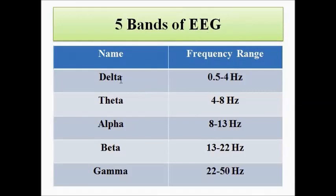The five bands into which the EEG frequency is divided are: delta, with a frequency range of 0.5 to 4 hertz; theta, from 4 to 8 hertz; alpha, from 8 to 13 hertz; beta, from 13 to 30 hertz; and gamma, from 30 to 50 hertz.